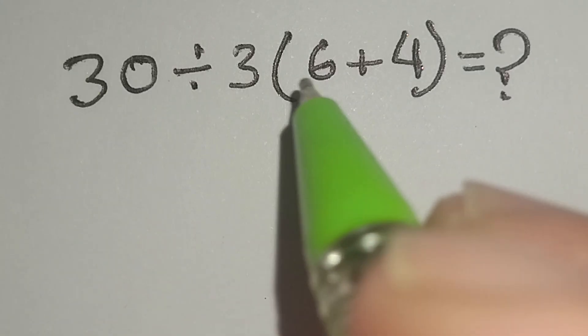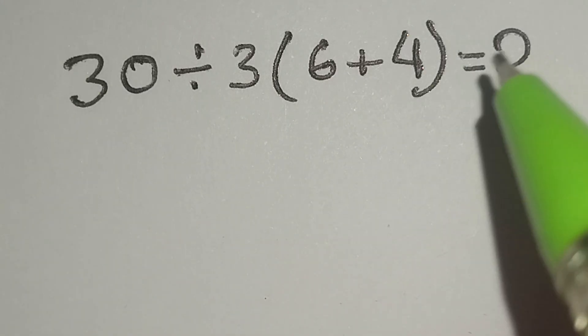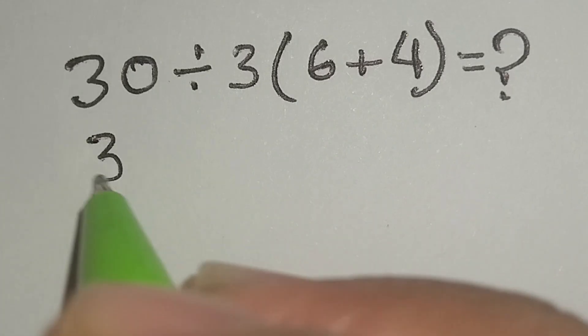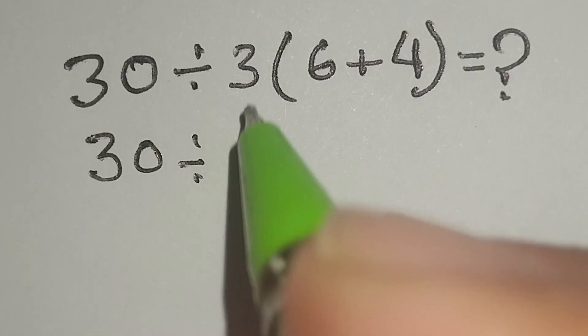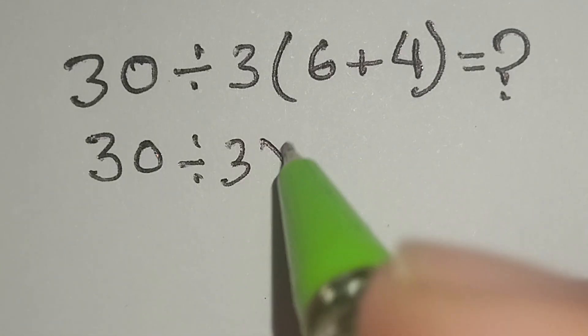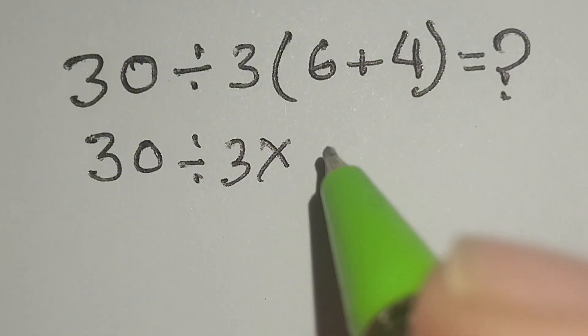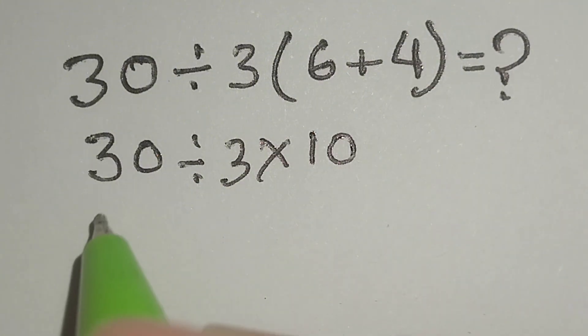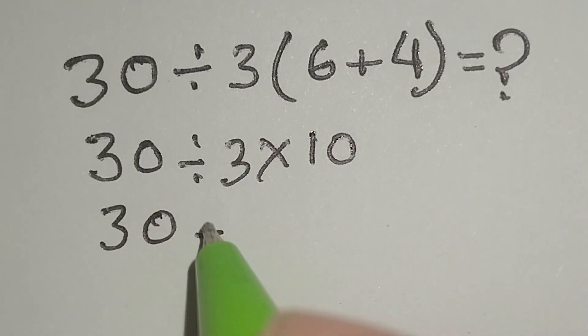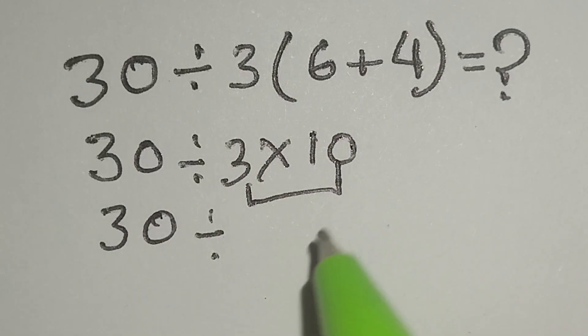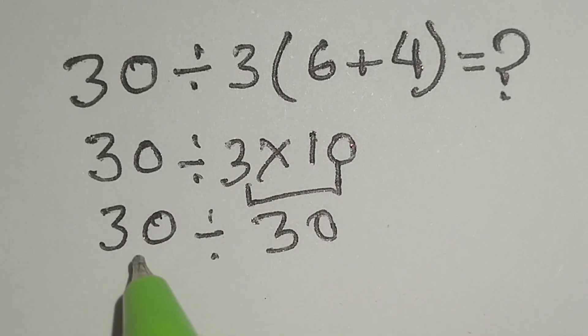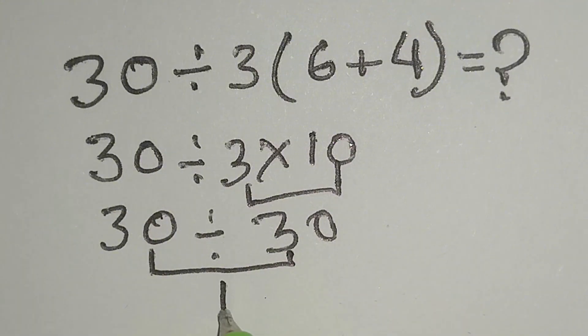30 divided by 3 bracket 6 plus 4 equals what? Here, 30 divided by 3 multiplied by 6 plus 4 gives us 10. 30 divided by 3 times 10 gives us 30. 30 divided by 30 gives us 1.